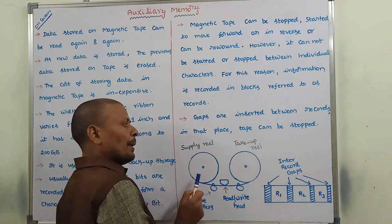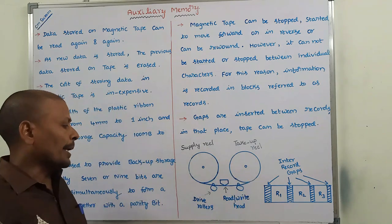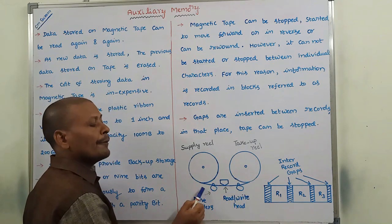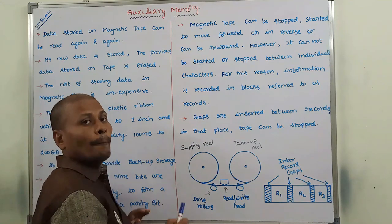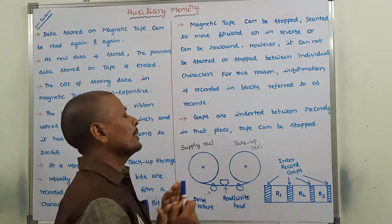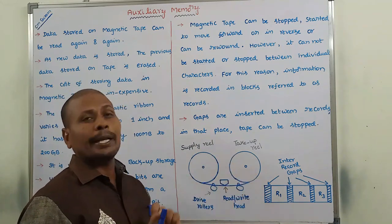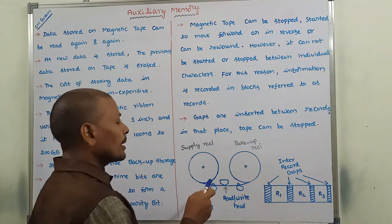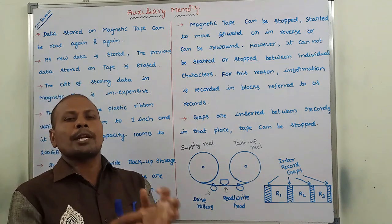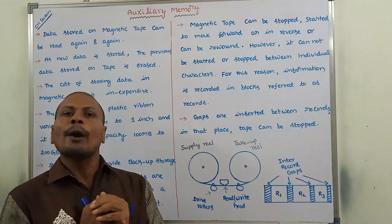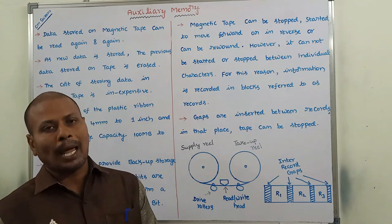The plastic ribbon can be moved from the supply reel to the take-up reel by using drive rollers. Drive rollers are used for moving the plastic ribbon from supply reel to the take-up reel. At that time, the read-write head reads information from or writes information into the plastic ribbon.